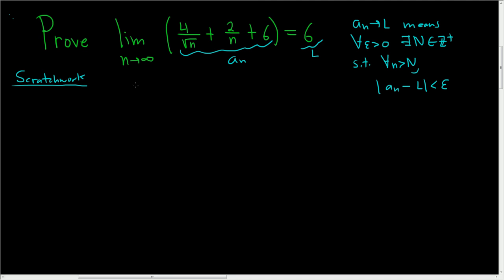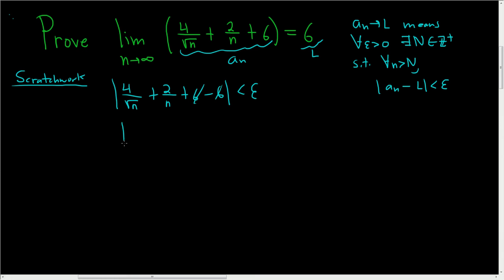What we'll do is look at the difference. So we have 4 over the square root of n plus 2 over n plus 6, and then we're going to subtract L, so minus 6. We want this to be less than epsilon. So these cancel, and we have 4 over the square root of n plus 2 over n.